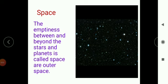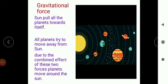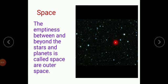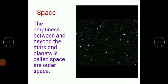Let's talk about space. Space is mostly empty, isn't it? The emptiness between and beyond the stars and planets is called space or outer space. As you can see here — twinkling stars, shining stars — but there is some empty, dark space. That emptiness between and beyond the stars and planets is said to be space or outer space.